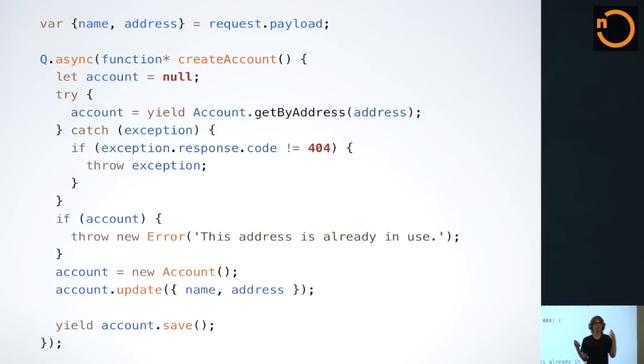Let's look at an example of using Q to map asynchronous operations. Imagine that this is some kind of route handler in our business logic. I'm using the hapi.js framework in Node. It's a regular HTTP framework. What we're doing here is we're defining a create account function. First, what we want to do is let's say that our post body has two fields, a name and address. We want to enforce the uniqueness constraint so that an account cannot be associated with one address. So the first thing we do is we call a getByAddress method.